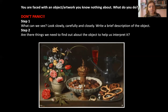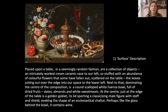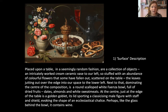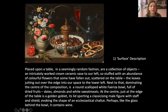Let's start with the surface description of this painting. Placed upon a table in a seemingly random fashion are a collection of objects: an intricately worked cream ceramic vase to our left, so stuffed with an abundance of colourful flowers that some have fallen out, scattered on the table, the leaves jutting out over the edge into our space on the lower left. Next to that, dominating the centre of the composition, is a round, scalloped, white faience bowl full of dried fruits, dates, almonds and white sweetmeats. At the centre, just at the edge of our table, is a golden goblet, its lid sporting a classicising male figure with staff and shield, evoking the shape of an ecclesiastical chalice. Perhaps, like the glass behind the bowl, it contains wine.